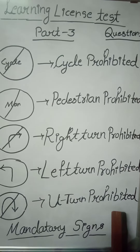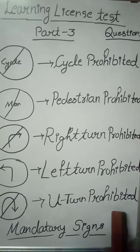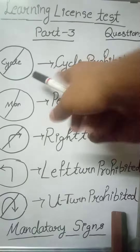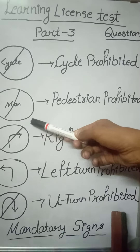Today we are again with you on this channel to share five more symbols regarding learning license test questions. We are sharing five symbols with you. The first symbol is cycle prohibited.